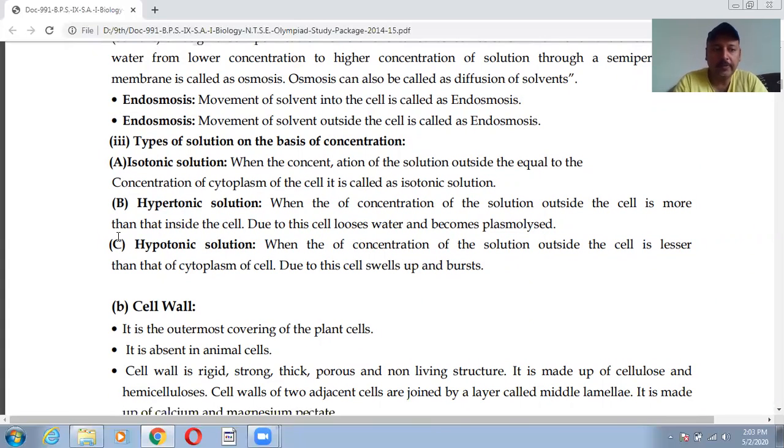On the basis of this osmosis we can divide the solution into three categories: one is isotonic, another is hypertonic, and third is hypotonic. Iso means same, so when the concentration of the solution outside and inside that is equal, then there will be no movement of the particles, no movement of the solvents, no movement of the ions, then it is known as isotonic. Hypertonic: when the concentration of the solution outside the cell is more than the inside of the cell, then we can say there is a movement. Due to this, cell loses water. Outside concentration is more than inside, so from lower to higher it will move and it becomes plasmolysed.